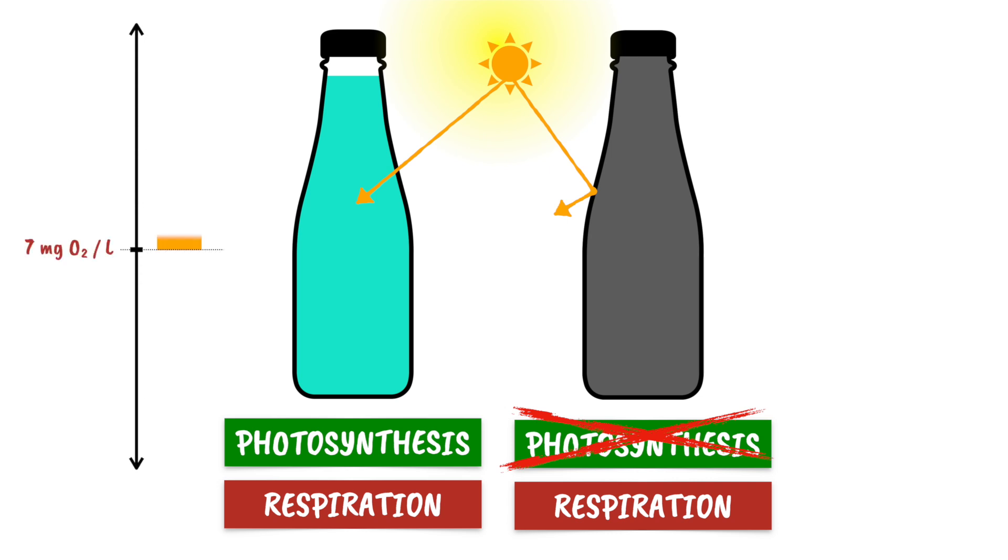I can measure the increase in oxygen level in the light bottle, and also the decrease, due only to respiration, in the dark bottle. From this, I would have a measure of the change in oxygen levels over one day, resulting from a combination of photosynthesis and respiration, which is proportional to NPP, and I'd know the respiratory losses.